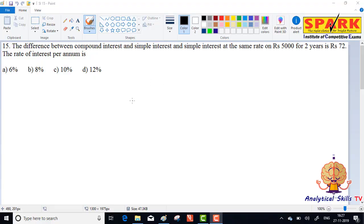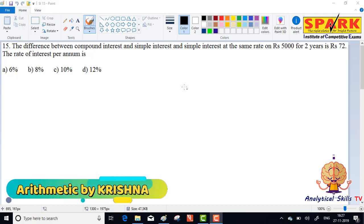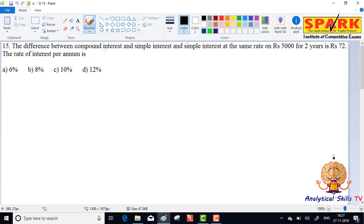Okay, 15th question of simple interest and compound interest, friends. Today, the difference between compound interest and simple interest at the same rate on rupees 5000 for two years is 72. Find the rate of interest per annum.